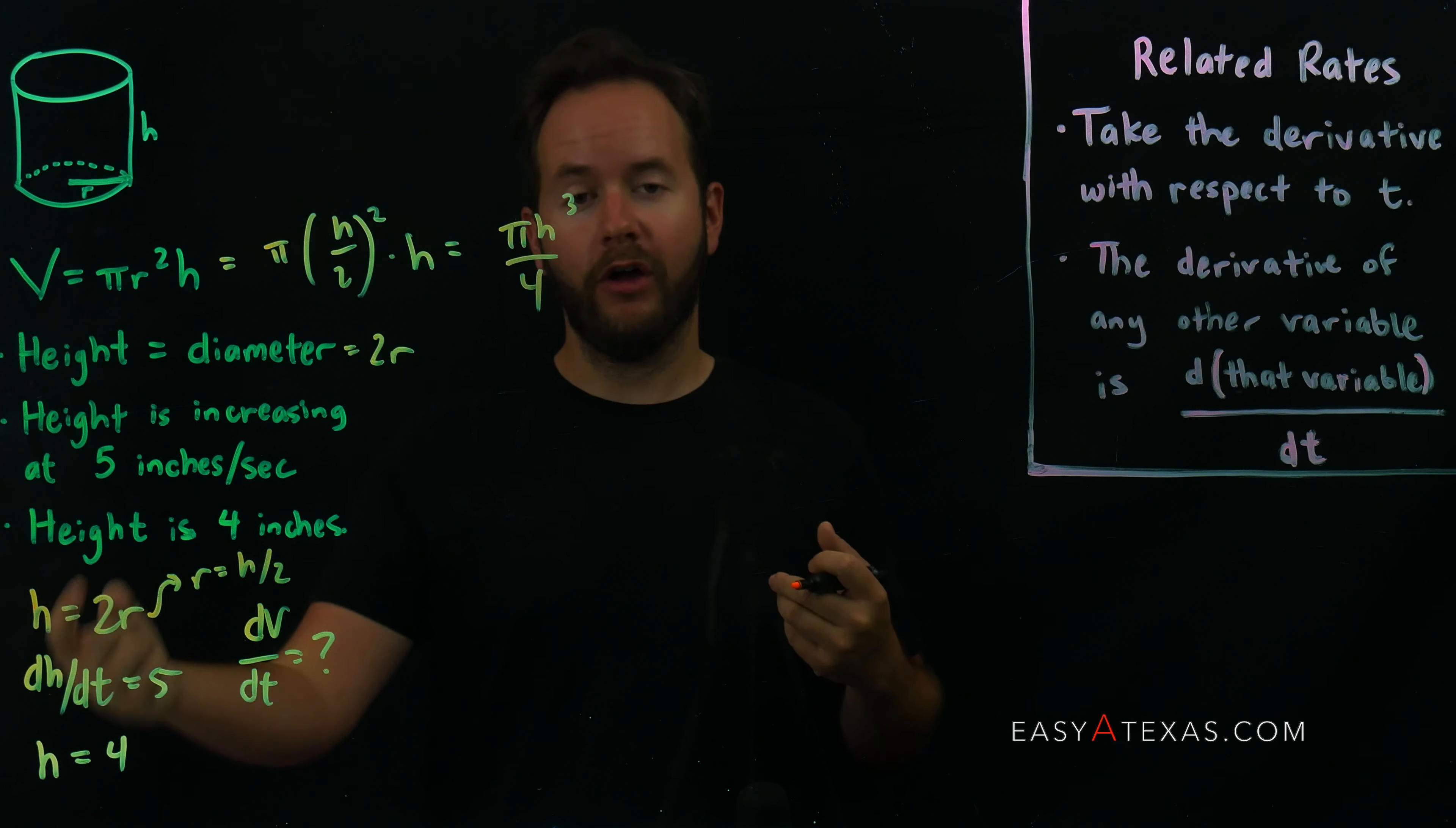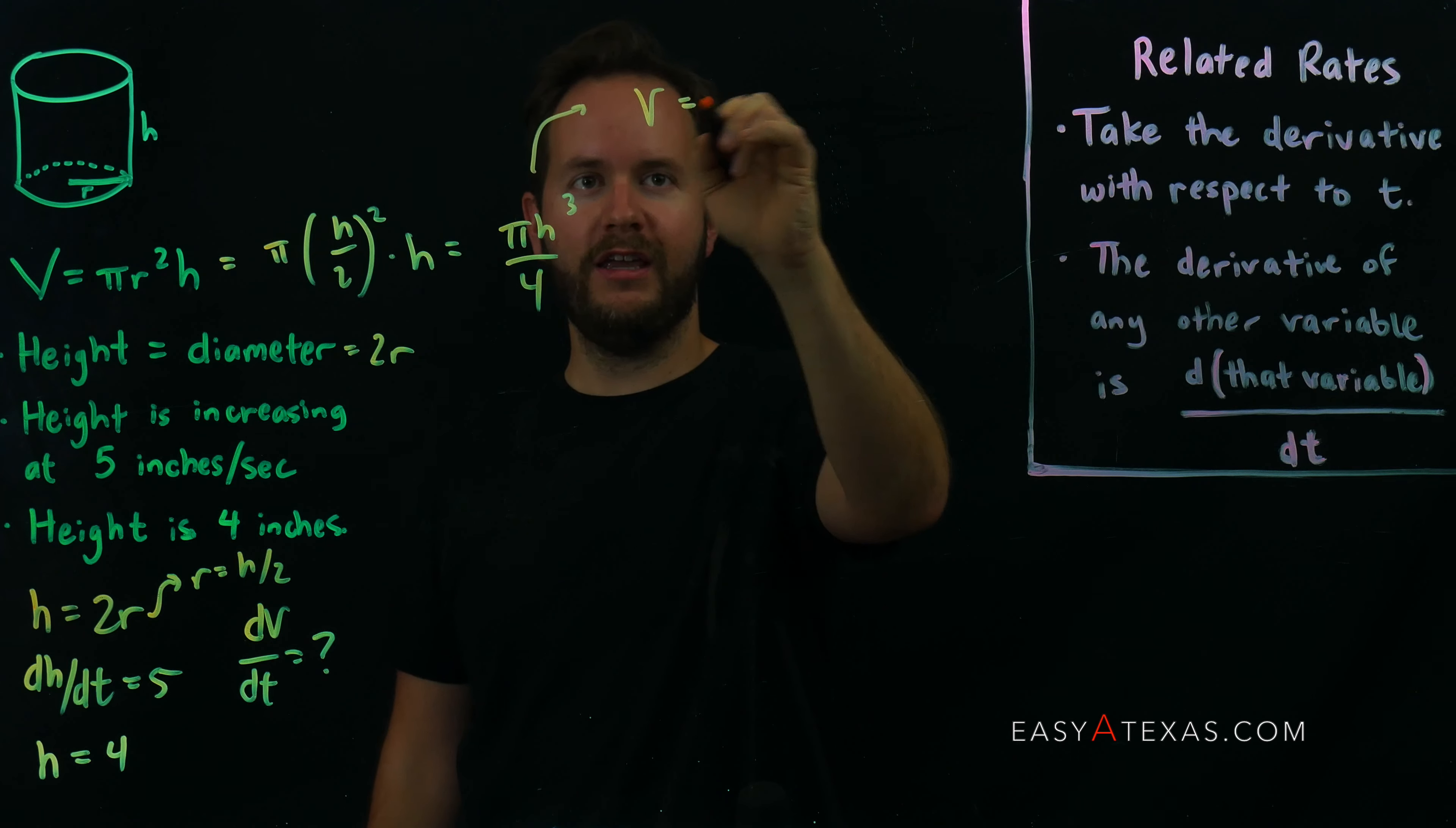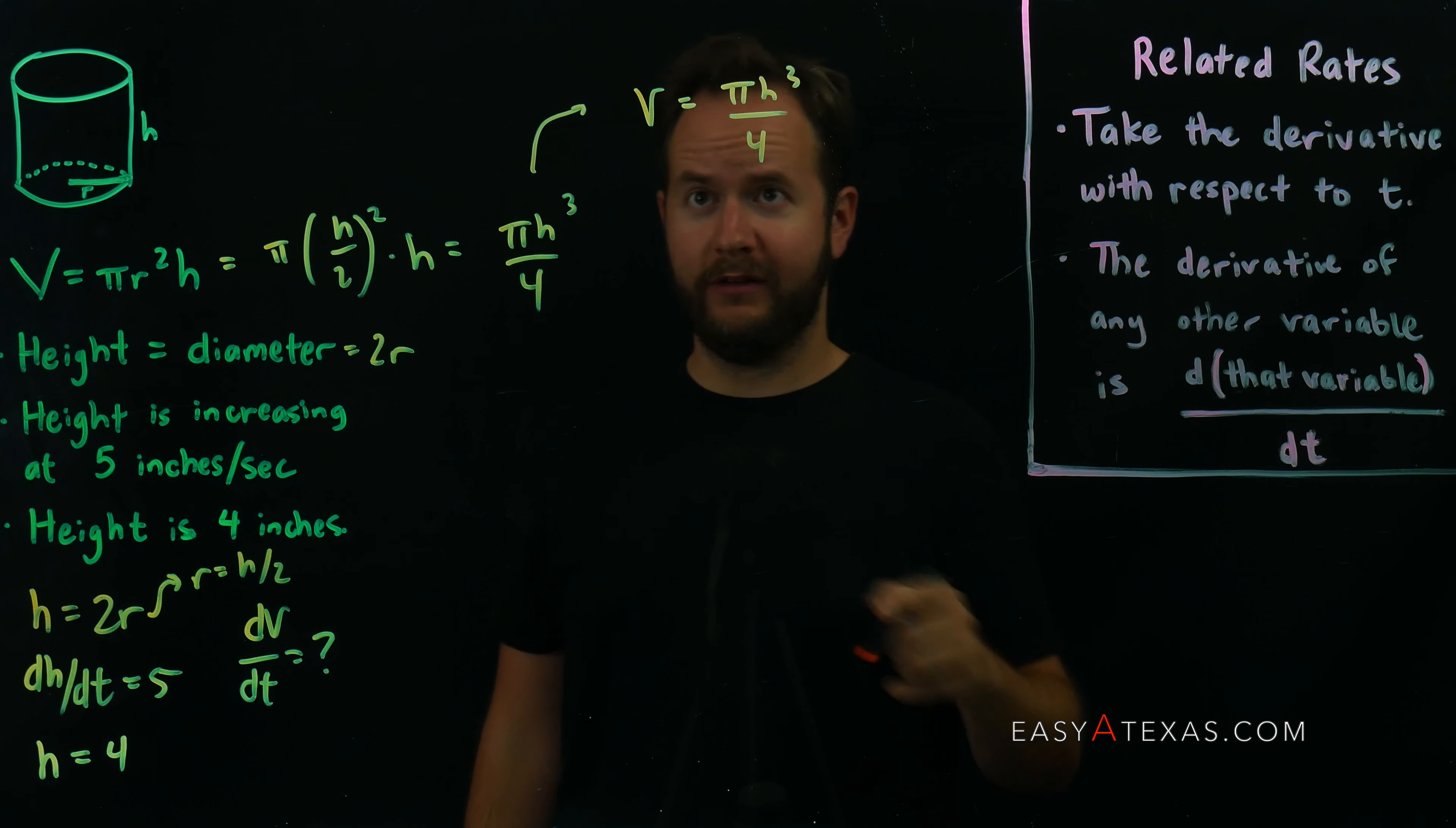Alright, now we're looking for dv/dt, the derivative of the volume with respect to time. So we're going to take the derivative. Let's actually write this one more time here: V equals pi h cubed over 4, just so you can see one equation rather than equals equals equals. I want one equation here. Okay, we're going to take the derivative of both sides with respect to t.